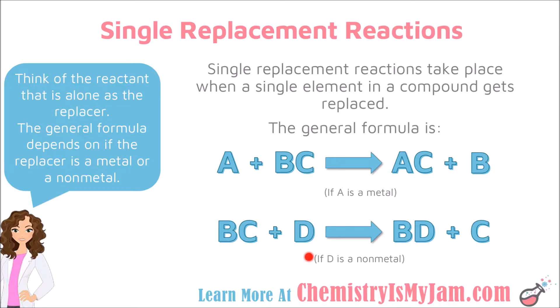In the bottom case, D is the element that is going to be doing the replacing. In this case, D is a nonmetal. When it goes into a compound, it is going to take a negative charge. So D is going to try to replace the negative portion of the compound, which would be the thing written second. So D is trying to replace C. On the product side, you can see where B and D are now forming a compound, and C has been left by itself.